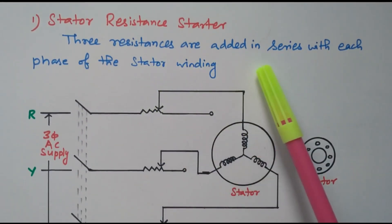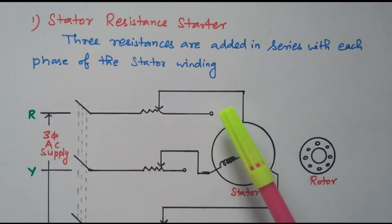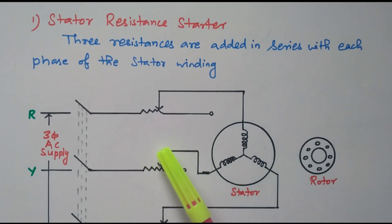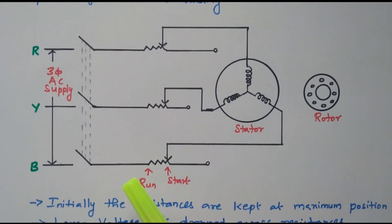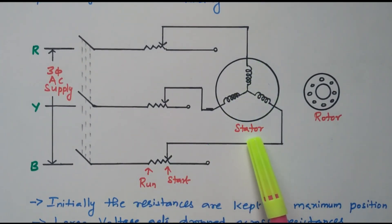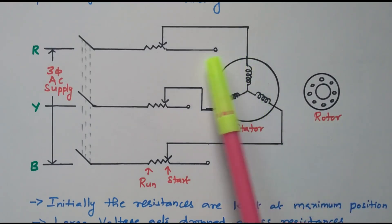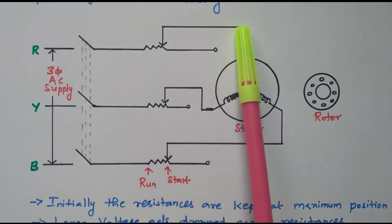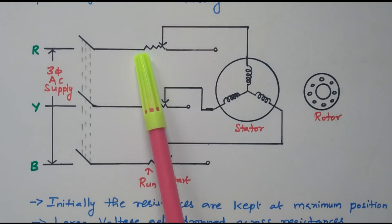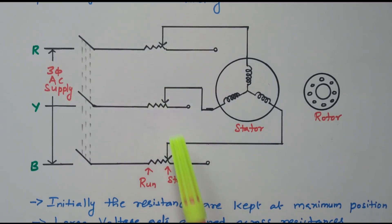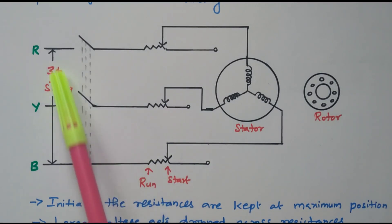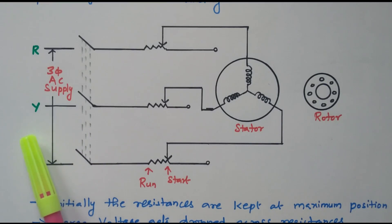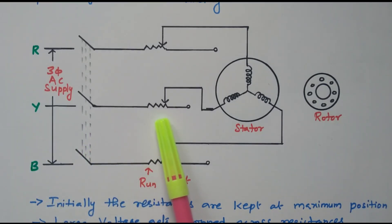In the stator resistance method, 3 resistors are added in series with each phase of the stator winding. Referring to the diagram: this is a 3-phase induction motor with a stator and a rotor, connected through 3 sets of resistance. This is the maximum resistance position — the voltage is fully dropped across the resistors and the remaining reduced voltage is applied to the stator. At the minimum resistance position, the full voltage is applied. Initially it is at the maximum resistance position, connected to the 3-phase AC supply through a switch in series with the 3 sets of resistance.